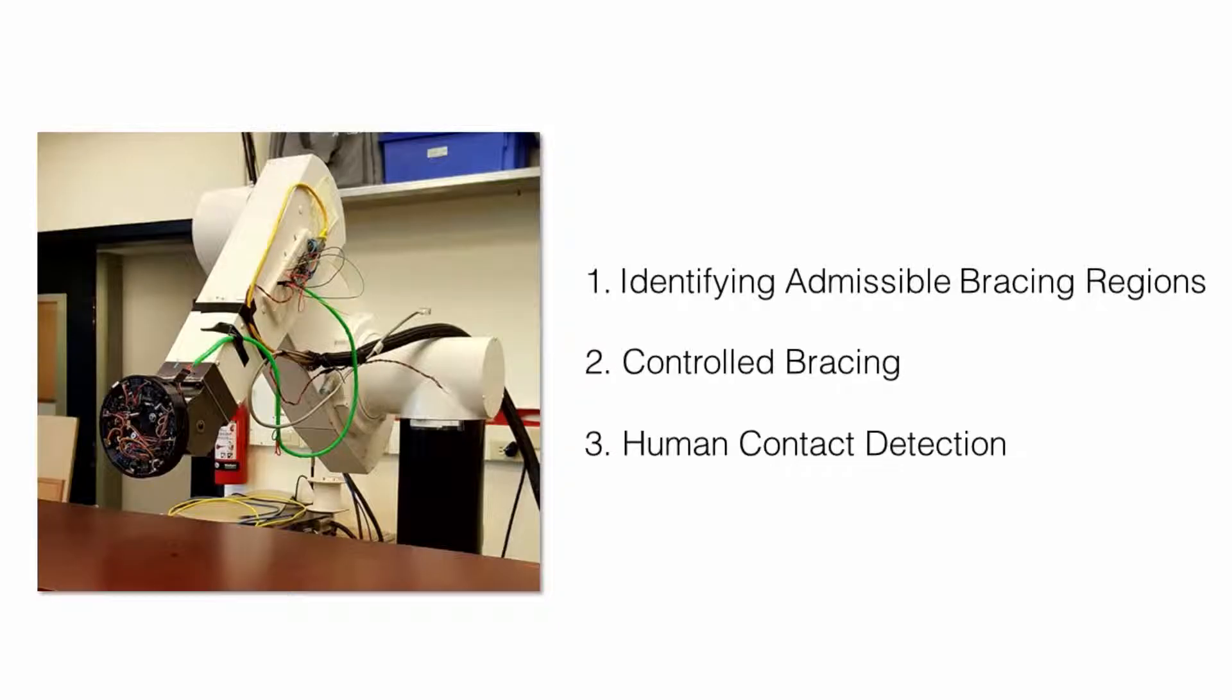We demonstrate the utility of this sensor through an experiment with a Puma 560 industrial robot. With the sensor mounted at its end-effector, the Puma is able to use multi-modal sensory perception to identify admissible bracing regions, brace safely against the environment, as well as detect human contact.